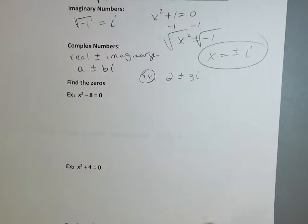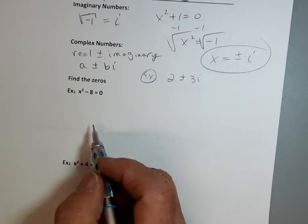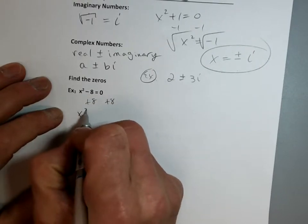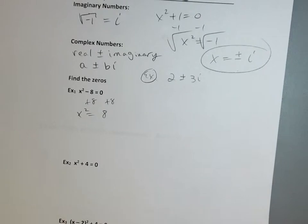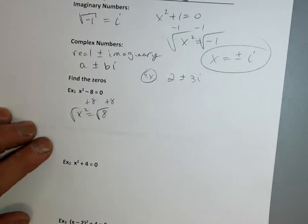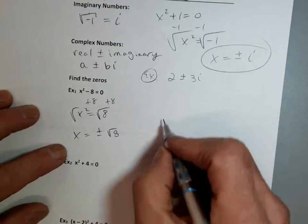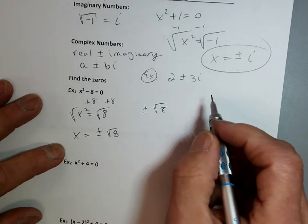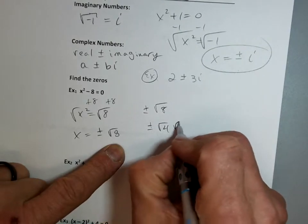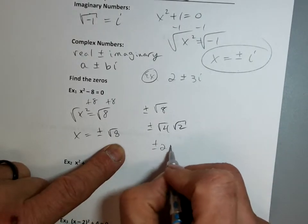Example 1: x squared minus 8 equals 0. Add 8 to both sides: x squared equals 8. That's a positive 8, not negative. Take the square root — two answers — so x equals plus or minus the square root of 8, which simplifies to plus or minus 2 square root of 2, since 4 times 2 is 8. Student question: why plus or minus? Because with x squared equals 4, both x equals 2 and x equals negative 2 work — negative 2 squared is still positive 4. That's why you always get plus or minus.